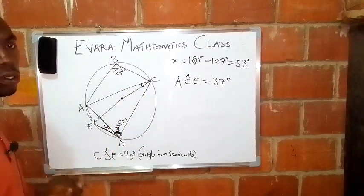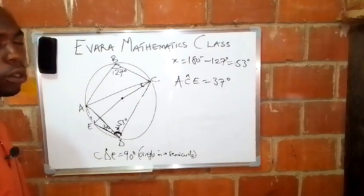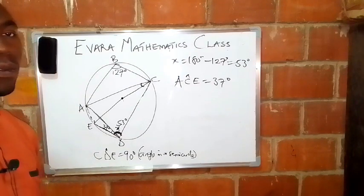So since this angle and this angle are from the same chord, that means both of them are what? Equal. We call them angles in the same segment or angles suspended by the same chord. Thank you. Don't forget to subscribe.